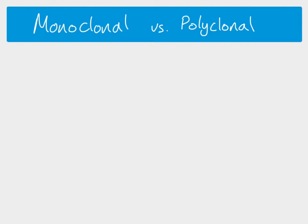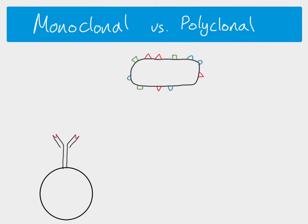First of all we'll look at what we mean by monoclonal antibodies in comparison to polyclonal antibodies. So if we have a pathogen, let's say a bacterial cell, we know that a pathogen will have lots of antigens on its surface — many thousands of different antigens. I've just shown three different antigens here.